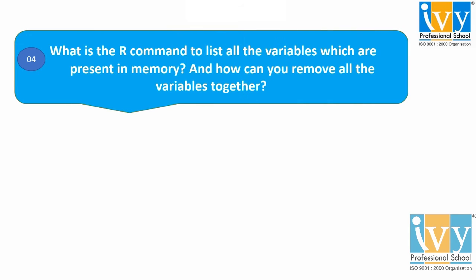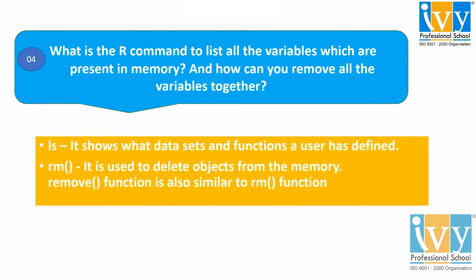Moving to the fourth question: What is the R command to list all the variables present in the memory, and how can you remove all the variables together? The R command used to list all the variables present in the memory is the ls command. It shows what data sets and functions a user has defined.